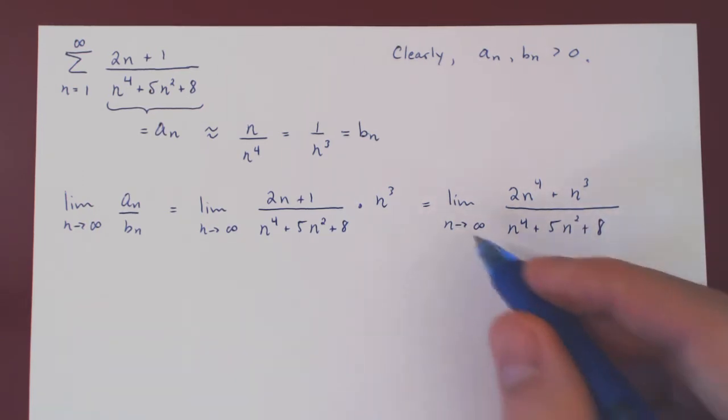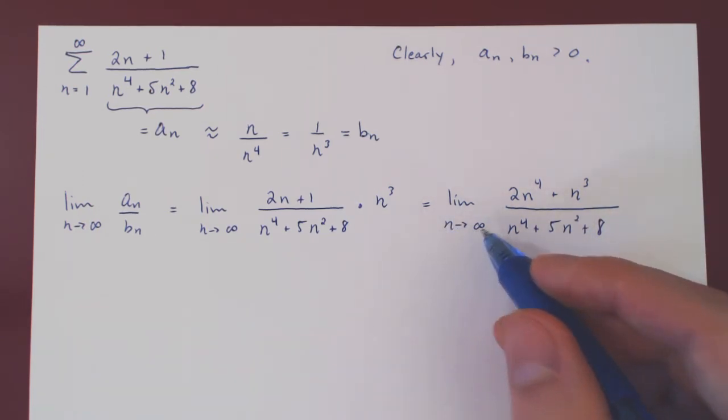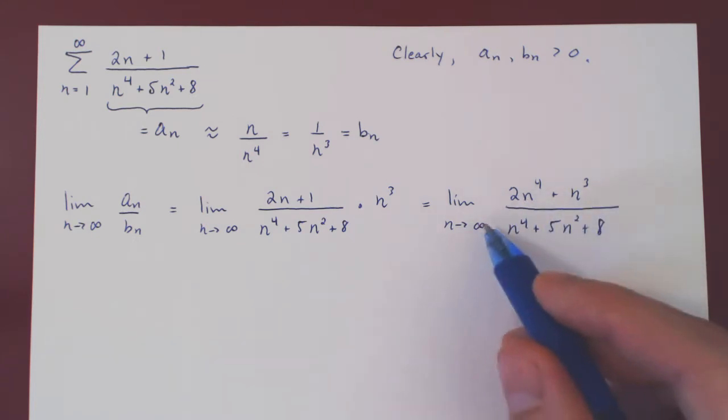So we'll have 2N to the 4 plus N cubed over N to the 4 plus 5N squared plus 8. Now it's clear, as N tends to infinity, that we have an infinity over infinity case. But here, do not use L'Hopital's rule. We can do much simpler.